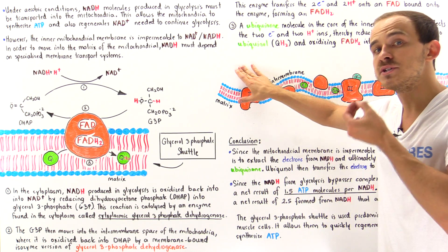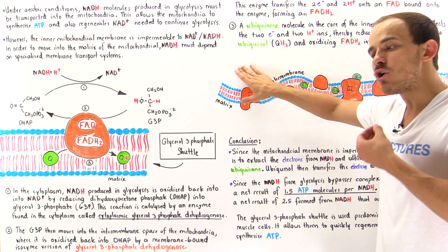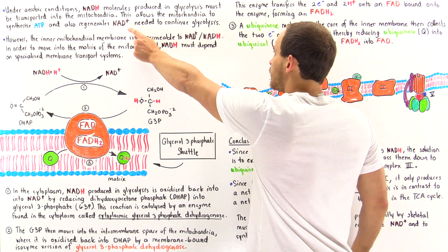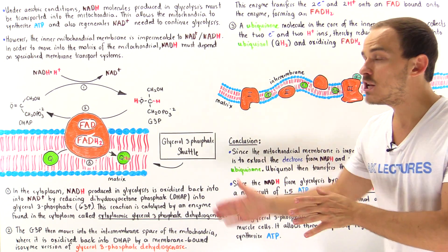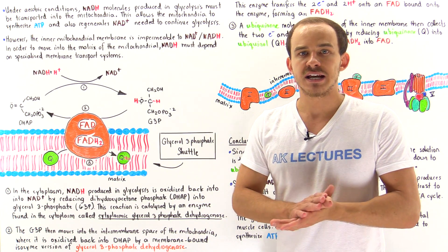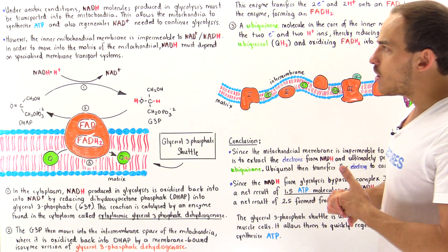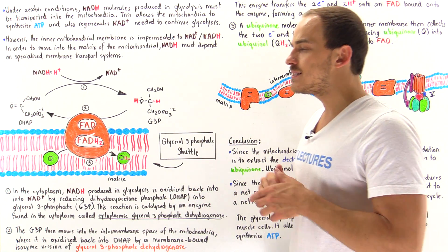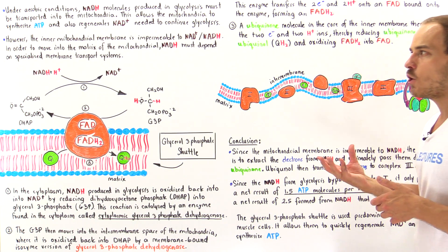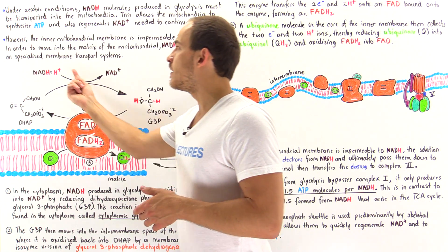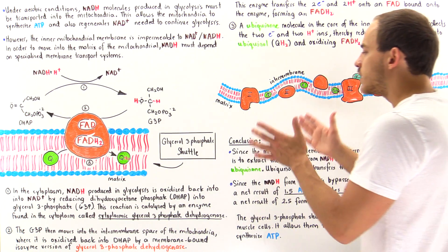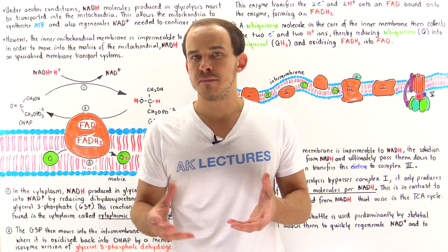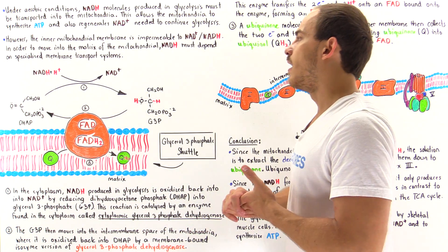The cell must use the NADH molecules not only to produce ATP molecules, but also to regenerate the NAD+ coenzyme needed for glycolysis to continue. There are actually different ways by which NADH molecules can get into the mitochondria. In this lecture we focus on a specific membrane transport system known as the glycerol 3-phosphate shuttle, which is used predominantly by skeletal muscle cells.